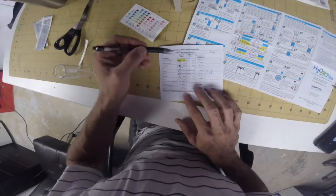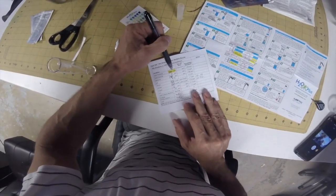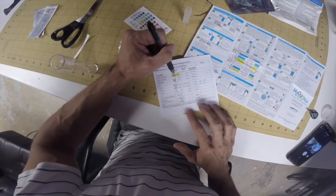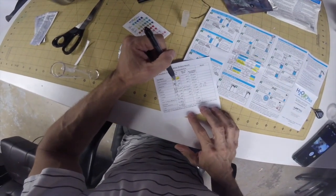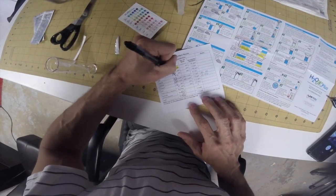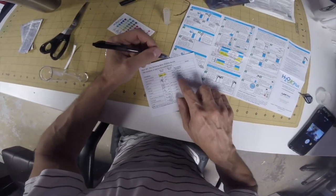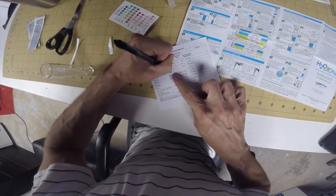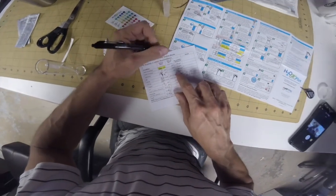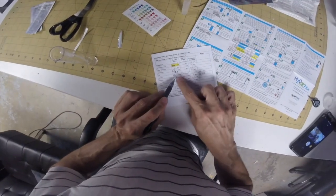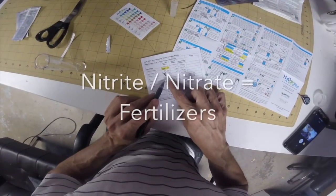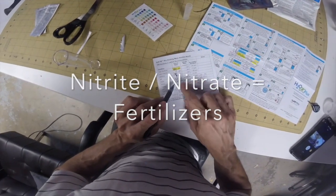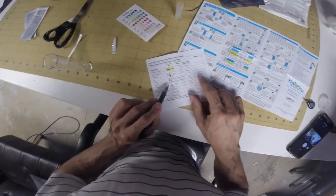So everything checks out. Total hardness, 800 parts per million. And for brackish water, that's right where it needs to be. Chlorine, zero. Alkalinity, 120 parts per million. pH between eight and nine. Nitrate safe, it was zero, zero point one. Nitrite also safe, zero, zero point two.